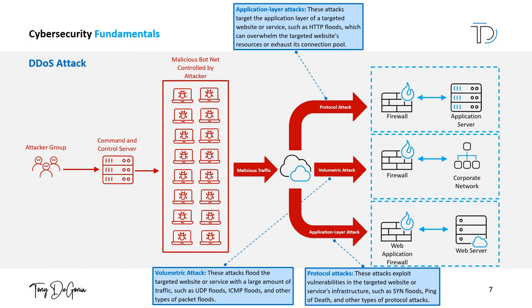There are several types of DDoS attacks. Volume-based attacks flood the targeted website or service with a large amount of traffic, such as UDP floods, ICMP floods, and other packet floods. Protocol attacks exploit vulnerabilities in the targeted website or service's infrastructure, such as SYN floods, ping of death, and other protocol attacks. Application layer attacks target the application layer, such as HTTP floods, which can overwhelm the targeted website's resources or exhaust its connection pool. DDoS attacks can cause serious disruptions and loss of service.